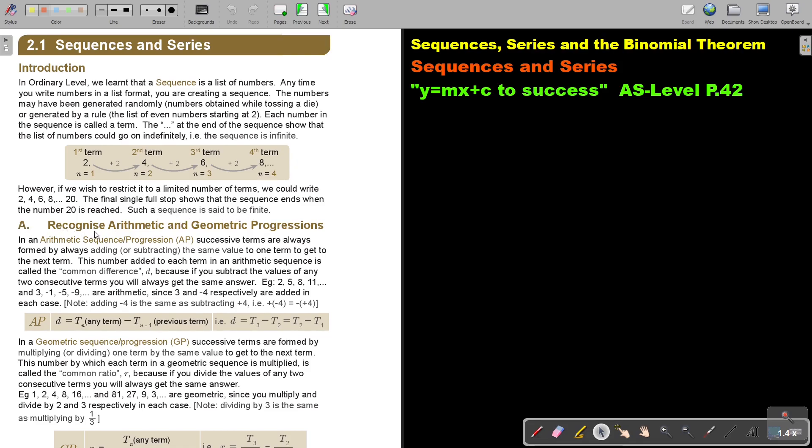Let's start with recognize arithmetic and geometric progressions. This we also did in ordinary level. In an arithmetic sequence or progression, AP, successive terms are always formed by adding or subtracting the same value to one term to get the next term. This number added to each term in an arithmetic sequence is called the common difference, D.